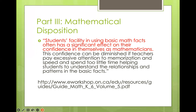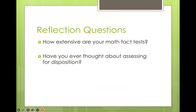When assessing for automaticity, you're also checking whether kids think flexibly — asking questions like 'if your friend was stuck, what would you tell them?' to see if they actually have strategies. We also want to know about student disposition. A student's facility with basic math facts often has a significant effect on their confidence as mathematicians. It's really important to assess for disposition, and that is the general overview of math running records.